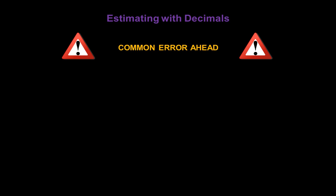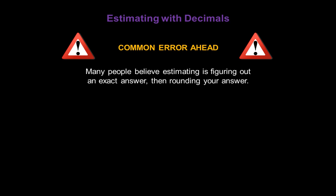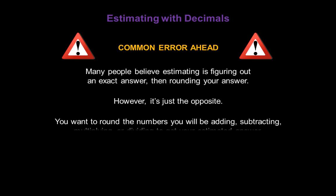There's a common error a lot of people make when they estimate, so let's address it right now. Many people believe estimating is figuring out an exact answer and then rounding your answer. However, it's just the opposite of that. What you want to do is round the numbers you'll be adding, subtracting, multiplying, or dividing to get an estimated answer.